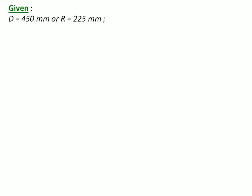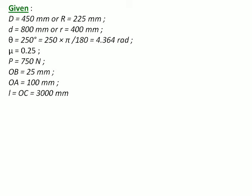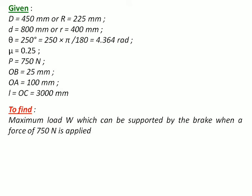Diameter D, this capital diameter D we have taken for the barrel. Then the brake drum diameter 800 mm or radius 400 mm. Theta, that is angle of lap, 250 degrees converted to radians is 4.364 radians. Mu is 0.25, P operating force is 750 newtons, OB is 25, OA is 100 mm, and L, that is length of the lever OC, is 3000 mm. And we have to find load W which can be supported by the brake when the force of 750 newtons is applied.